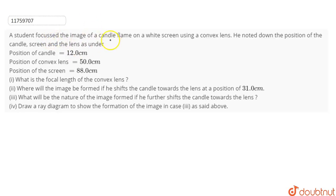See, a student has taken a candle flame image on the white screen using a convex lens. Let's draw this. Convex lens. This is the principal axis.